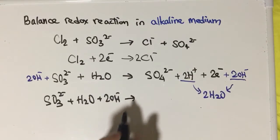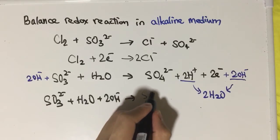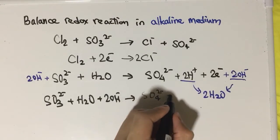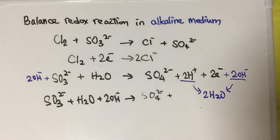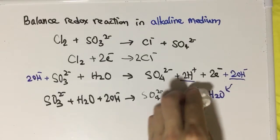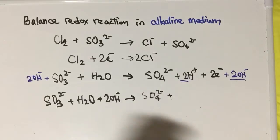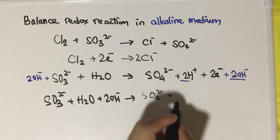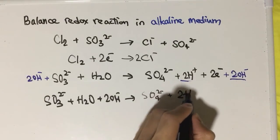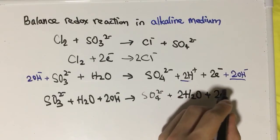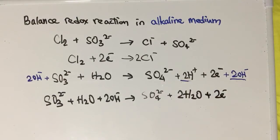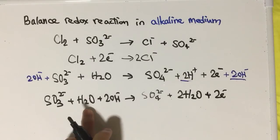This will become SO₄²⁻ plus... hold on a second... 2H₂O plus 2 electrons. After this, you can see that the reactant side has one H₂O and the product side has 2H₂O.